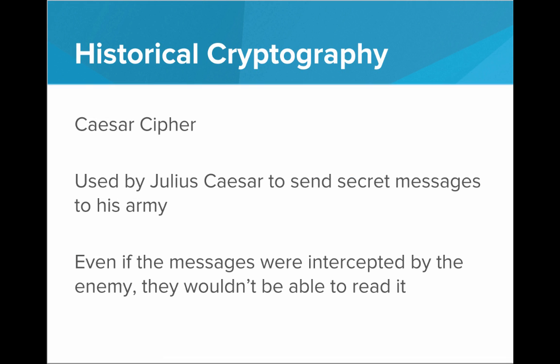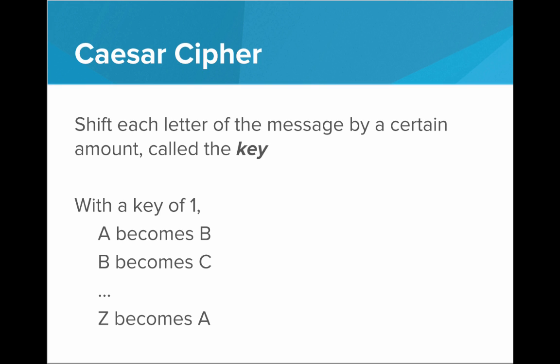So cryptography is a pretty old idea. For a long time, humans have had the need to keep information secret even when sending it long distances. One of the first examples of cryptography was in ancient Rome with Julius Caesar. Julius Caesar came up with what is known as the Caesar cipher, and it was used to send secret messages to his Roman army. He would encrypt these messages so that even if they were intercepted by the enemy, the enemy wouldn't be able to understand or read them. How the Caesar cipher works is you shift each letter of the message by a certain amount — this amount is called the key. For example, if we had a key of one, A would be shifted to become B, B would become C. Everything gets shifted down one. At the very end, Z wraps around and becomes A.